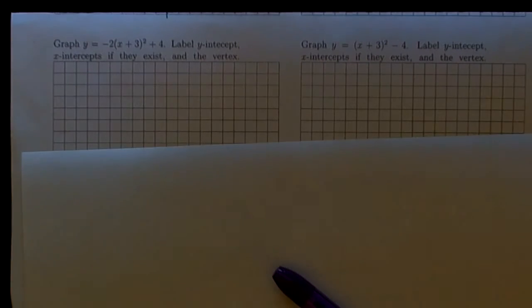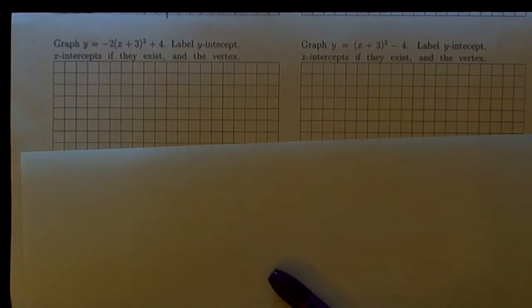This is the third of four videos looking at the graphs of quadratic functions or parabolas. In this particular case, the function is in vertex form: y equals negative 2 times the quantity x plus 3 squared plus 4. When we're through, we're supposed to label the y-intercepts, the x-intercepts if they exist, and the vertex, and fit them all nicely onto this piece of graph paper.